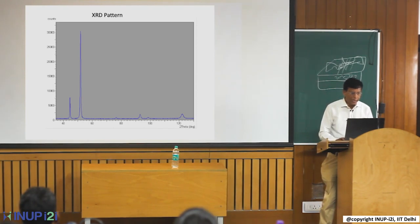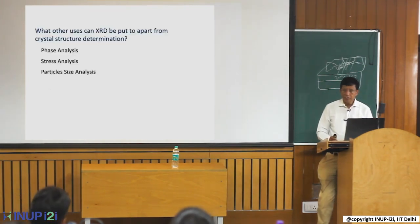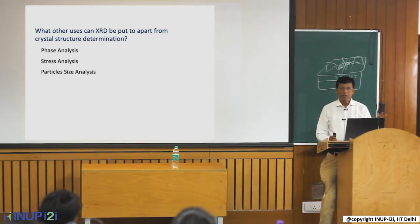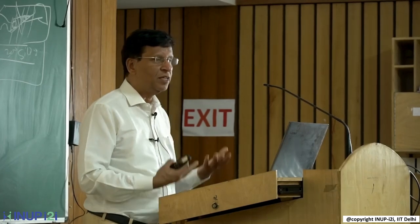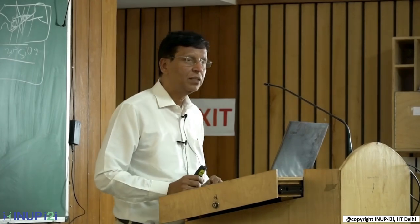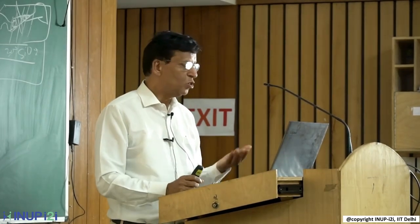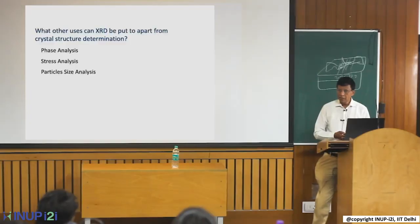So from XRD you can do phase analysis — find out which material is present and in what percentage. You can also find out stress or strain in thin films or nanostructures. And you can find out the crystallite size using the Scherrer formula, which correlates crystallite size with the theta angle and the FWHM — full width at half maximum of the peak.